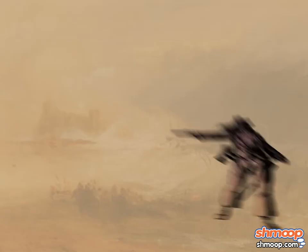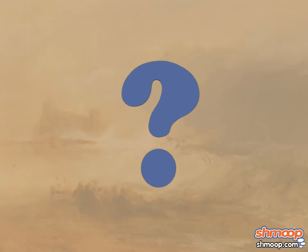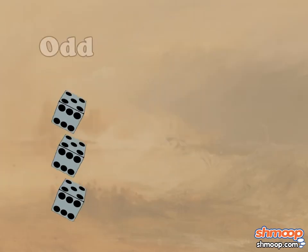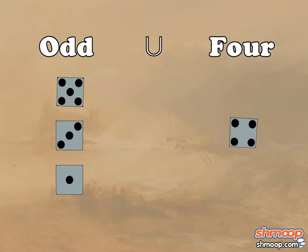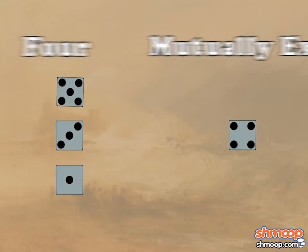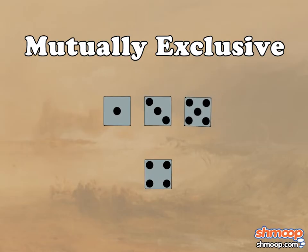Back to the dice game. Let's test your pirate jargon. How would you describe these events: rolling a die and getting an odd number, or a four? Note that the weird bar sign isn't a typo — that bar sign is just another way for mathematicians to write OR. They are mutually exclusive, because a four cannot be an odd number. So either you're going to roll the four, or an odd number.